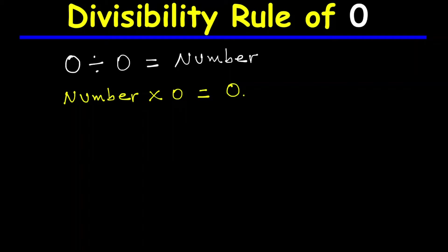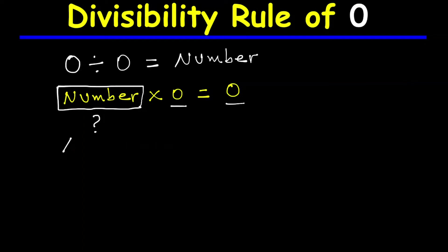Is there a number that when multiplied by zero gives zero? Your answer must be: it can be any number, because any number multiplied by zero is zero.